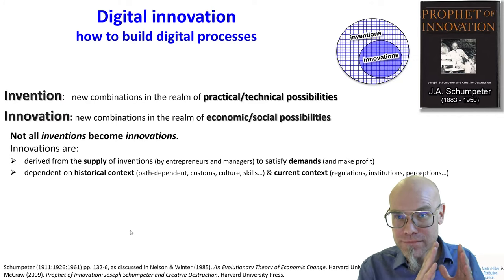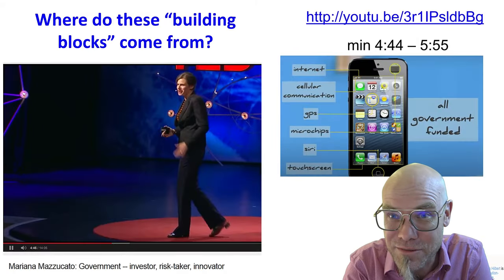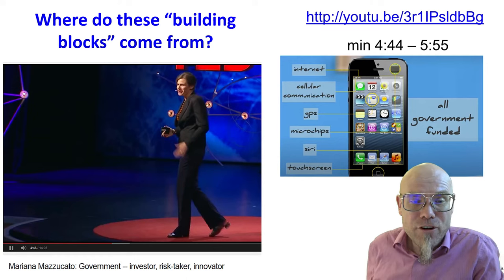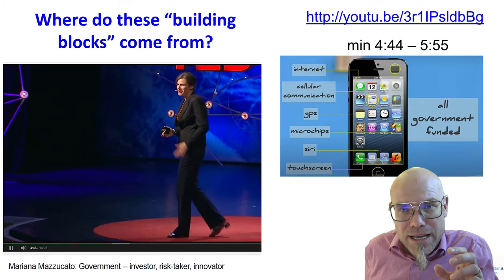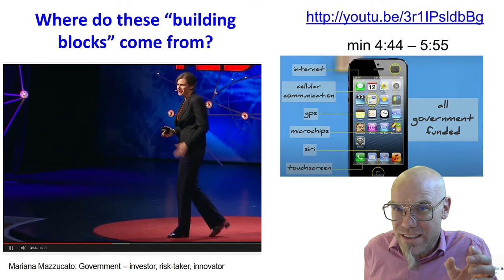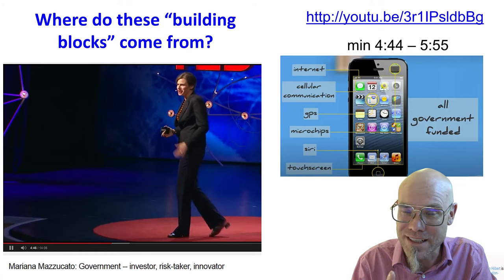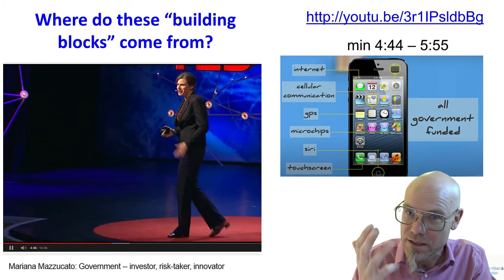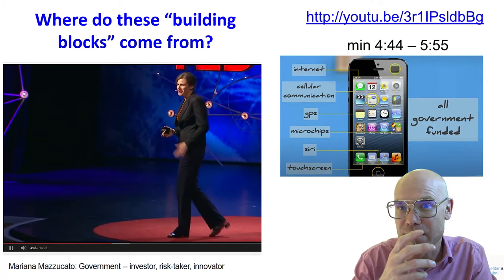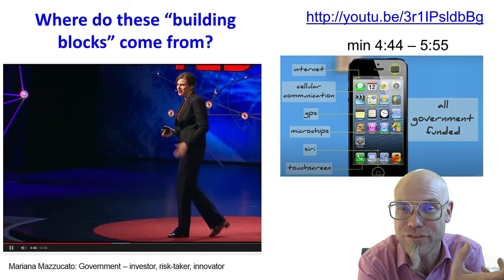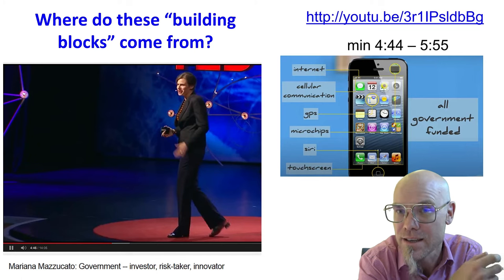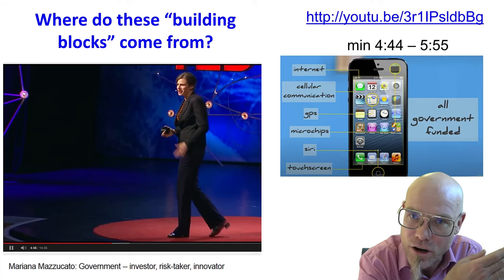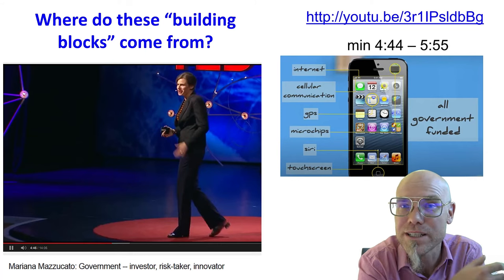One interesting detail: where do these building blocks come from? Steve Jobs reinvented the iPhone by combining existing blocks — but where did they come from? All the main building blocks of the iPhone were provided and financed by the government and the public sector: the Internet, cellular communication, GPS, voice recognition, the touchscreen — all provided from public funds, paid for with taxpayers' money. Often invented at universities, frequently through military funding, and then picked up by the private sector.